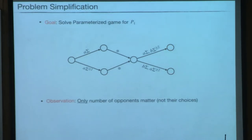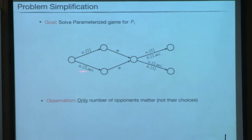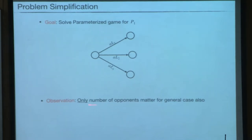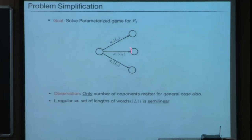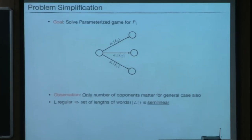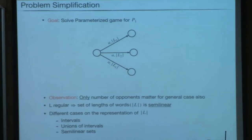A simplification: in this example, the opponents' choices actually do not matter — what matters is the number of opponents. We replace the action alphabet with just the number of opponents. One observation is that for the general case also, if we are interested in player 1's winning strategy, only the number of opponents matters. So we replace transitions with a first component being player 1's choice and a second component being the set of opponent counts. It is already known that if L is regular, the set of lengths of all words in L is semi-linear. We investigate this model for semi-linear sets in three sub-cases: intervals, unions of intervals, and general semi-linear sets, because these yield different complexities.